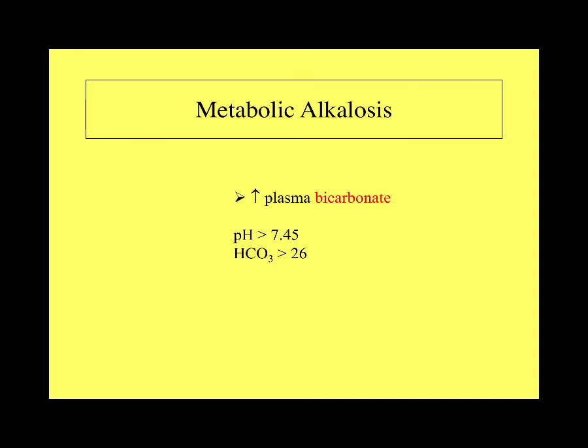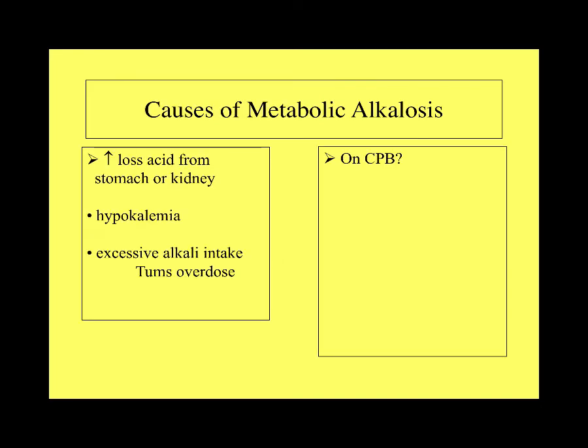Metabolic alkalosis is caused by too much bicarb in the plasma. Clinically, this results from increased acid loss from the stomach or kidneys, hypokalemia, or excess alkali intake — for example, taking excessive antacids, which are essentially bicarbonate. On bypass this is rare, but can occur when treating a metabolic acidosis with bicarb and adding too much.